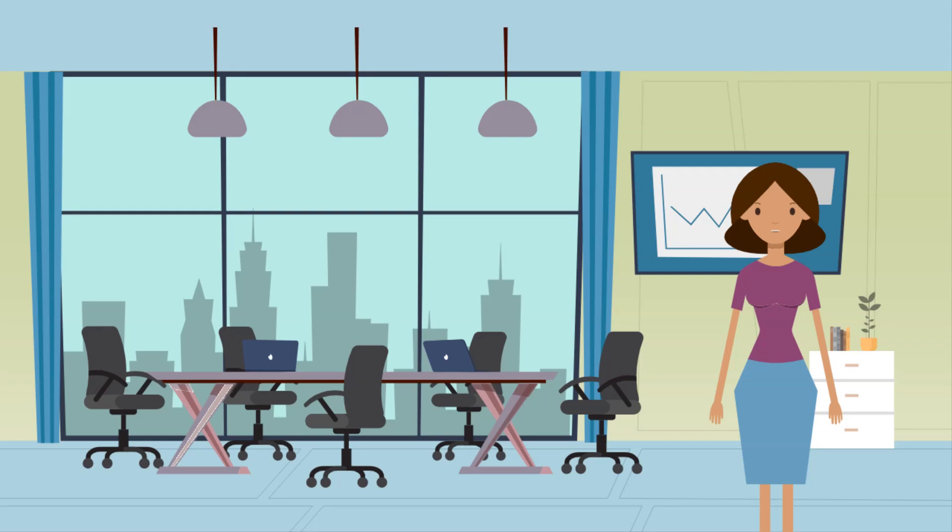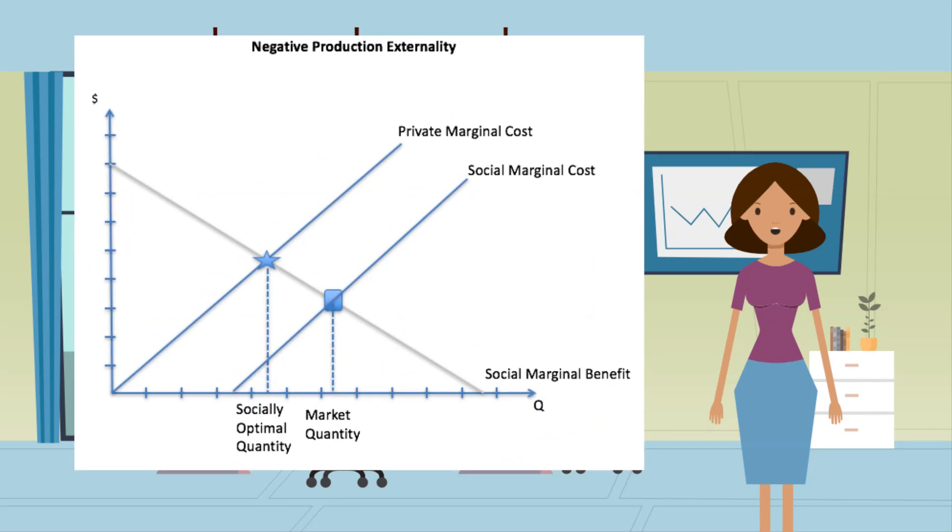Next, let's look at negative production externalities. A good example of this is air pollution. Looking at it on a graph, we can see that the market is producing too much of a good. In this case it is air pollution from burning fossil fuels.